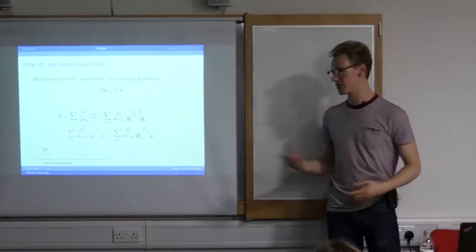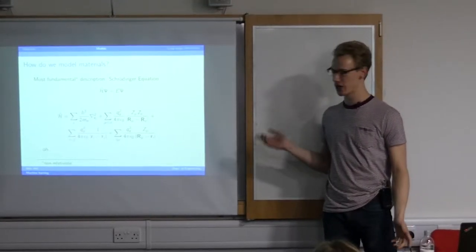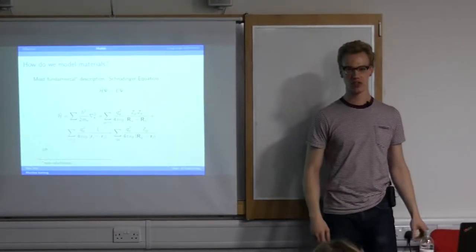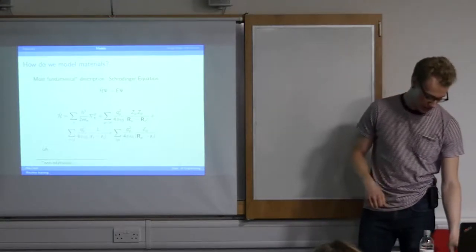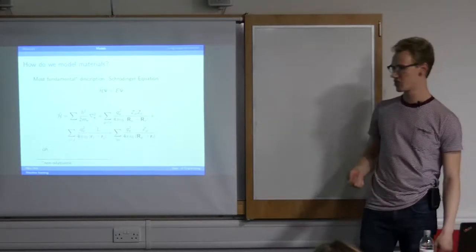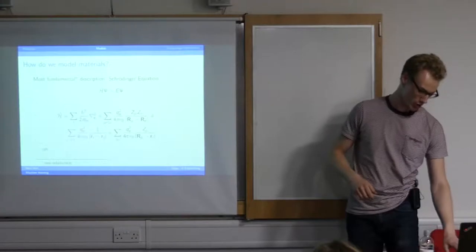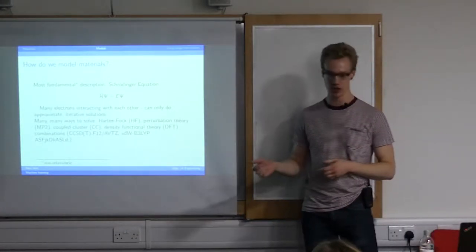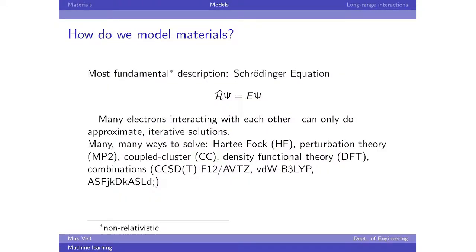But you know, this equation was written down maybe close to 90 years ago. So in the meantime, there have been lots and lots of approaches developed to solve this approximately. And so you end up with this alphabet soup of methods. We have Hartree-Fock for exactly accounting for exchange, we have perturbation theory for accounting for various correlation effects, you have coupled cluster. And only one of those acronyms is made up. See if you can guess which one. All the other ones are actually used. So there's lots of ways of doing this.